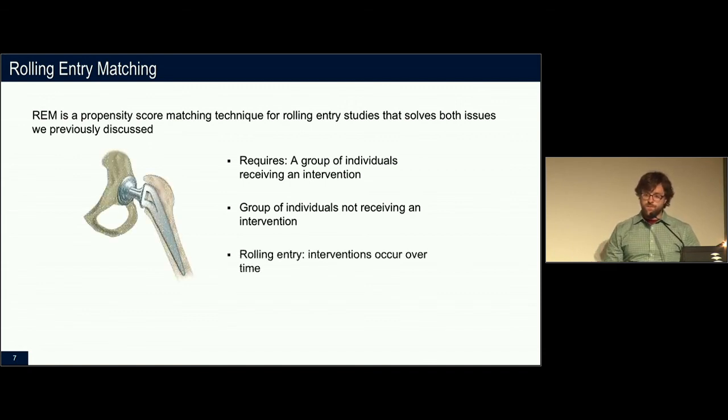An example of this would be a hip replacement. So hip replacement is a good example because not all 100 people that got this new hip replacement would get it on the same day. The doctor would be very busy if trying to do 100 hip replacements in the same day. So that's a rolling entry study.